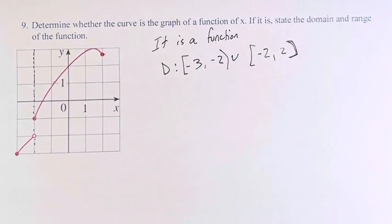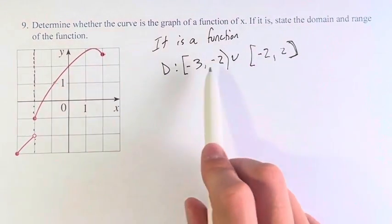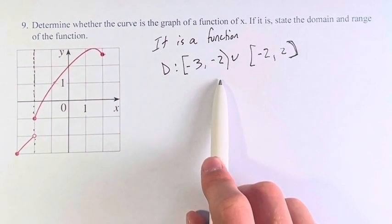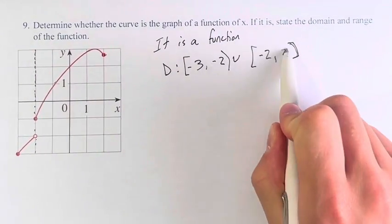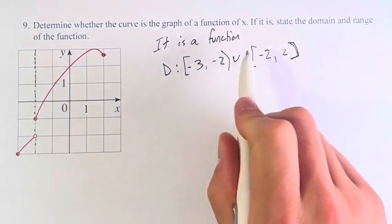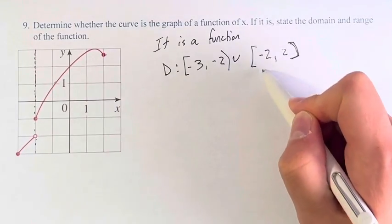So, another closed bracket. So, what we have actually is not two separate functions, but one continuous function. Because this goes up to negative 2, and this goes up to negative 2, so we can combine the two, because they include negative 2, at least on this side.